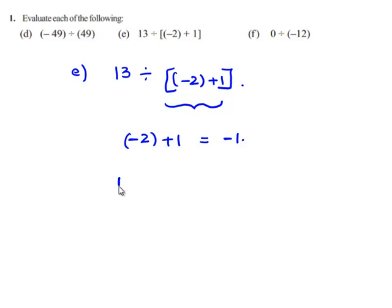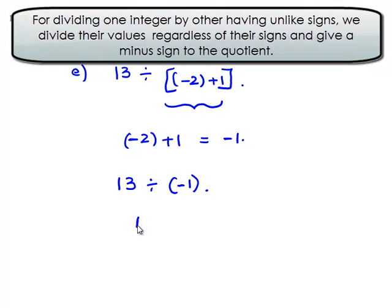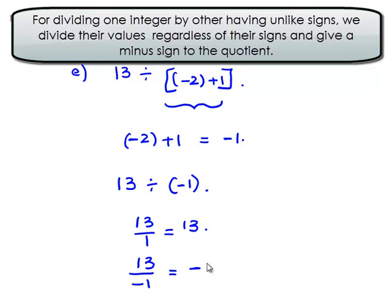Therefore, the problem becomes 13 divided by negative 1. When we divide two integers, first we divide their values regardless of their signs — that is, 13 divided by 1 gives 13. When we divide two integers having opposite signs, we always get a negative sign in the answer. That is, 13 divided by minus 1 gives minus 13.